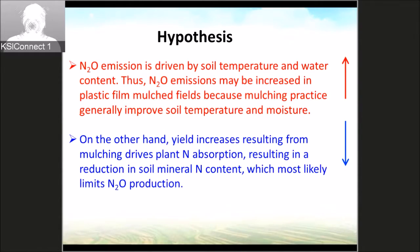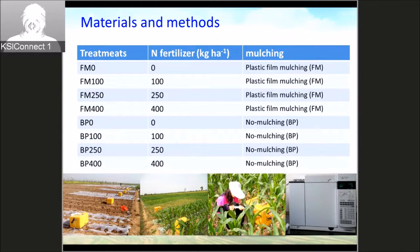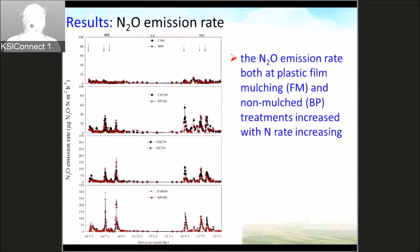For our work, we designed a field experiment including eight treatments: four nitrogen levels from zero to 400 kilograms per hectare, with plastic film mulching and non-mulching treatments. The first results show that N2O emission rates, both for plastic film mulching and non-mulching treatments, increased with increasing nitrogen application rate.